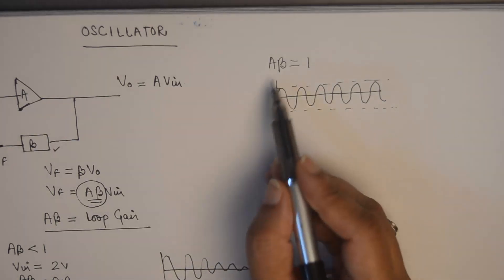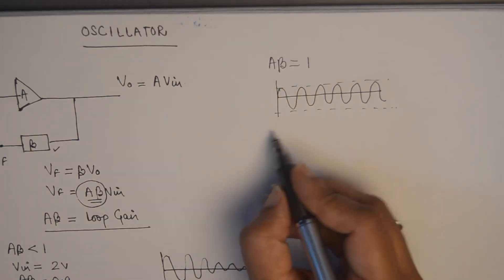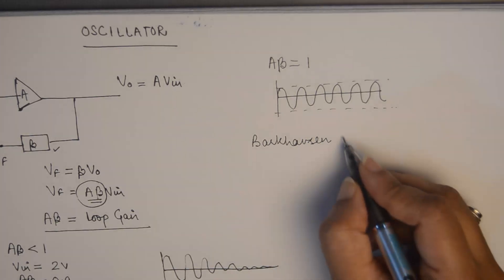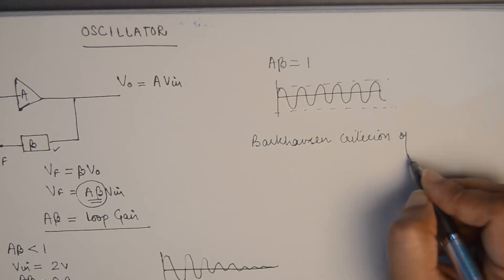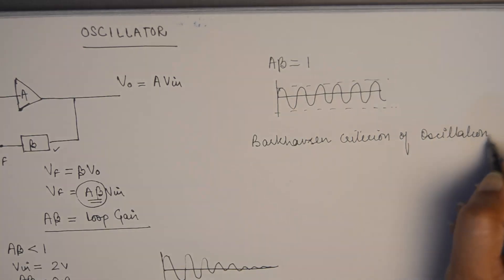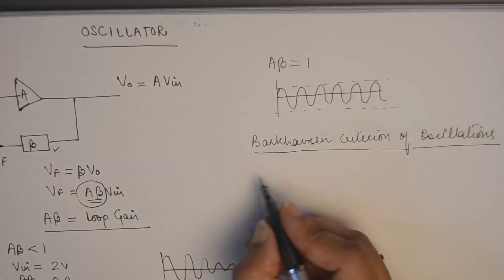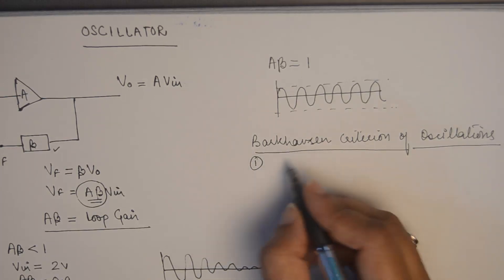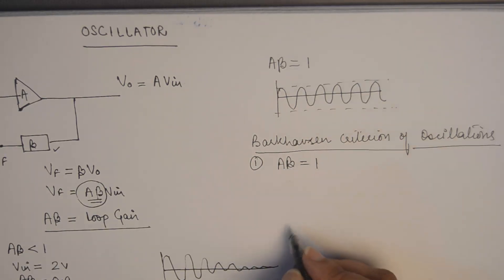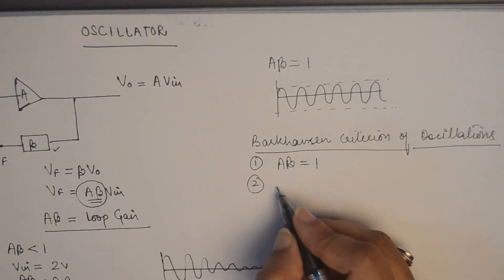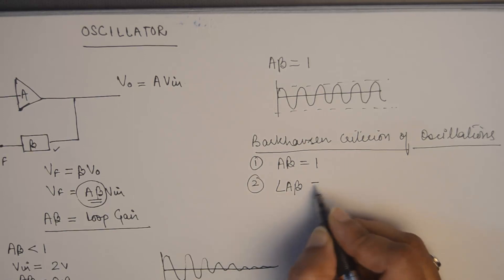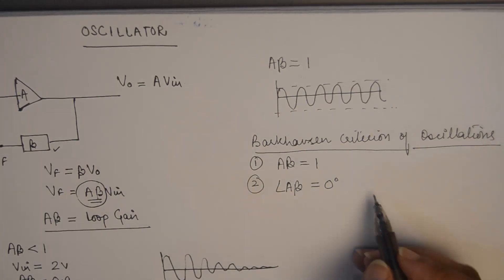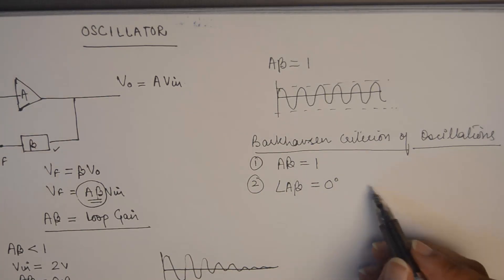This factor has been consolidated by Barkhausen and is known as the Barkhausen criteria of oscillations. The Barkhausen criteria lists two conditions in order to get sustained oscillations. The first condition is that the loop gain should be equal to 1 or unity, and the other condition is that the phase difference should be 0 degrees. Only if the phase difference is 0 degrees between the input and the output will I get sustained oscillations at the output.